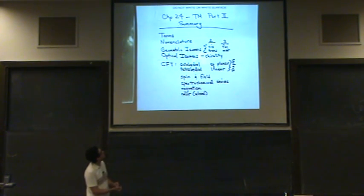The geometric isomers were the things that were cis, trans, fac and mer. Cis and trans have to do with two ligands. That's the key point for cis and trans. Whereas fac and mer have to do with three ligands.